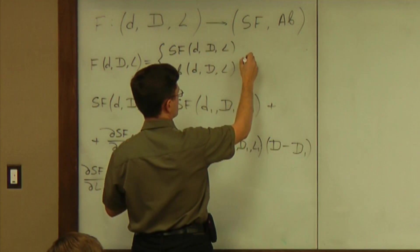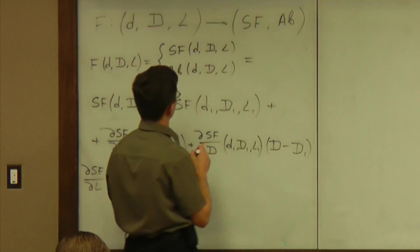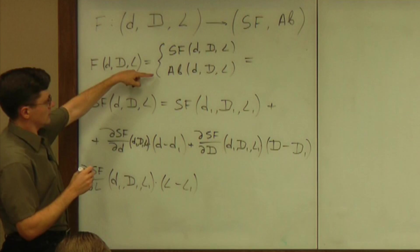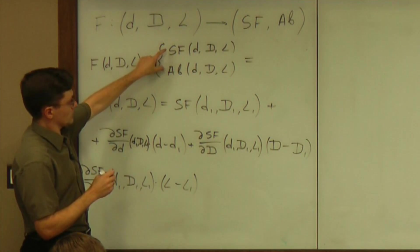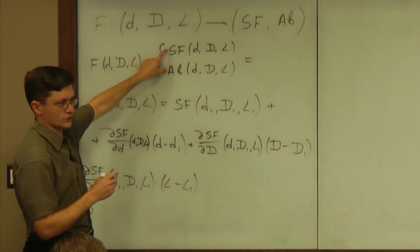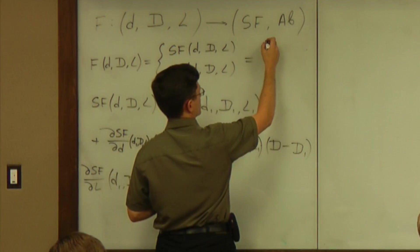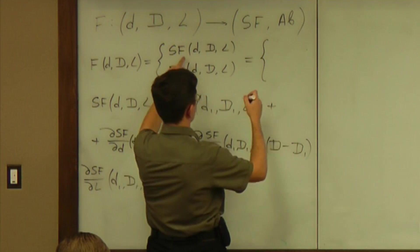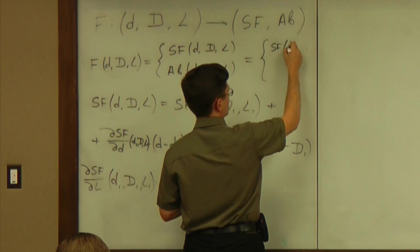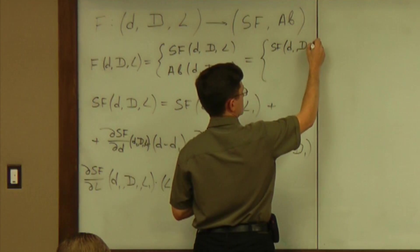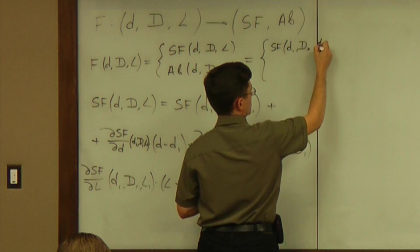So let me make it—let me try to make it here. I'm approximating these two functions using those Taylor series. So what I have is, again, a pair of safety factor at D1, capital D1, L1.